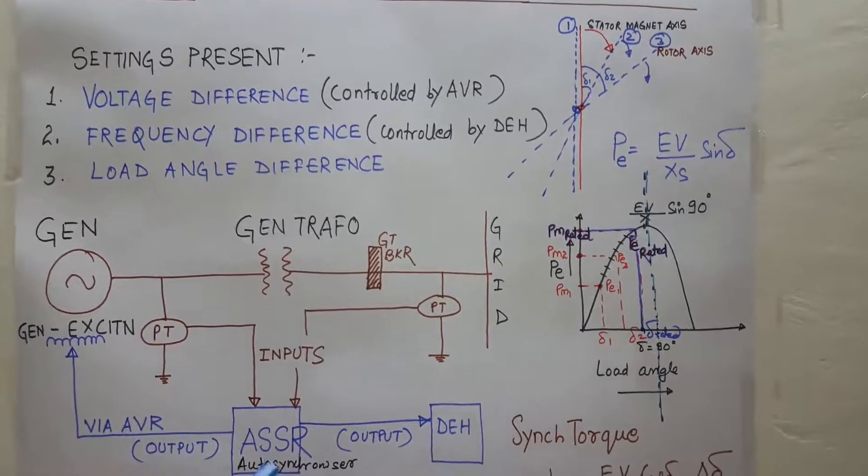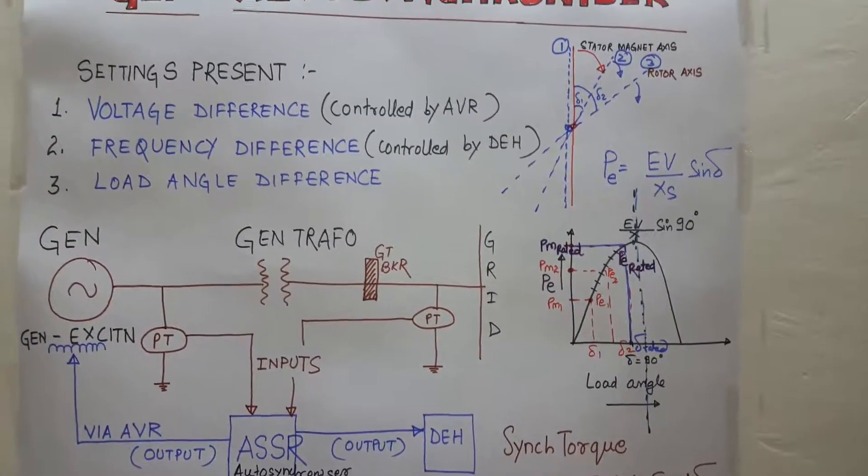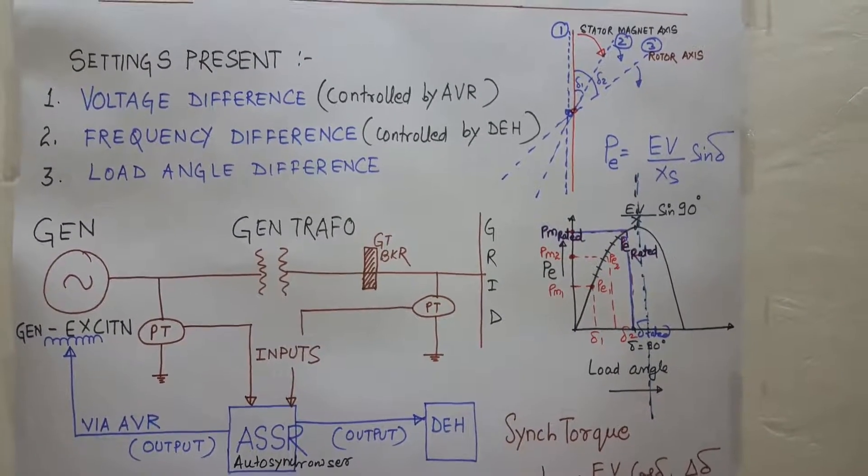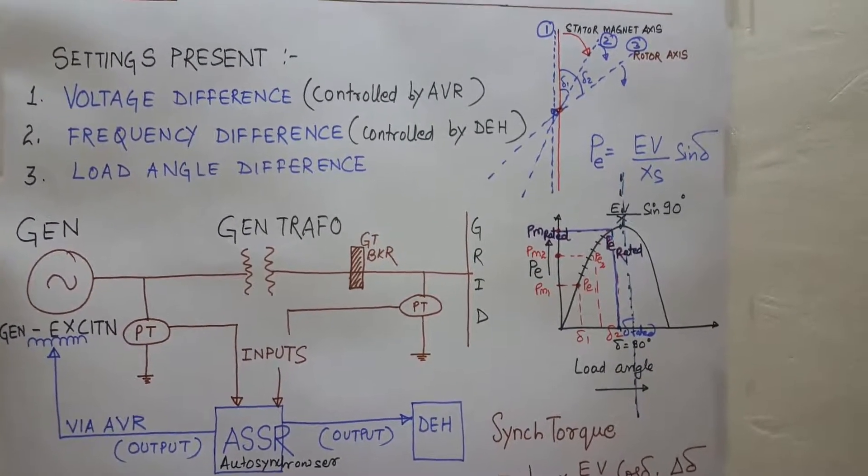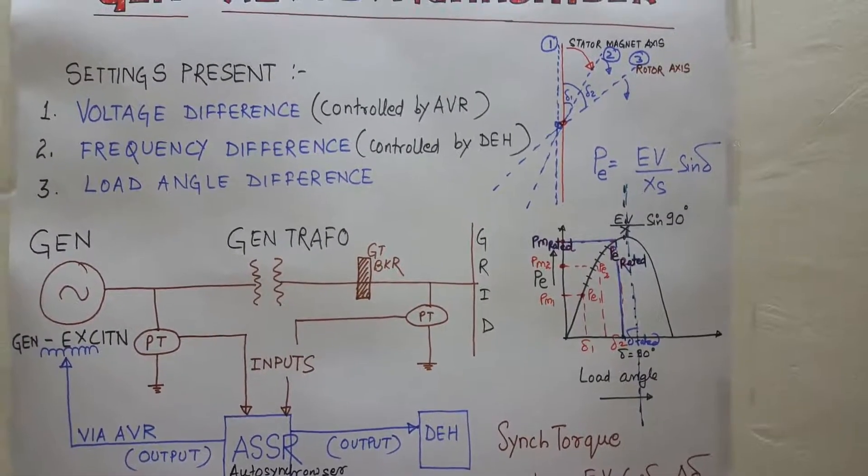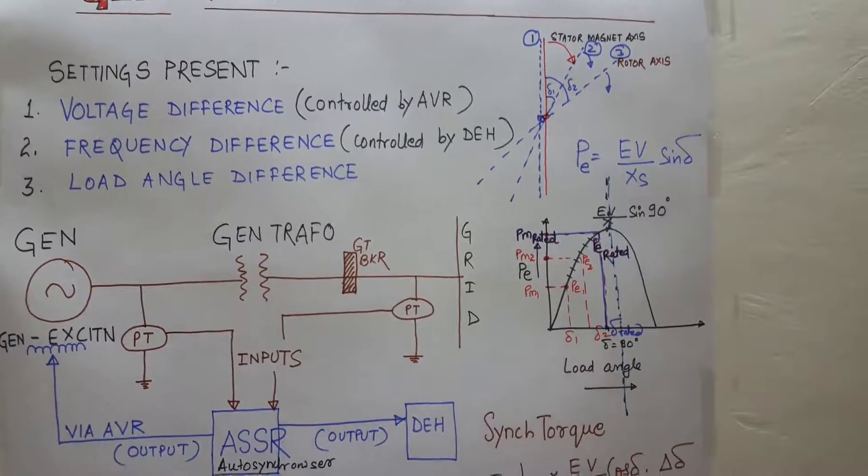So this job is done by the auto synchronizer. We have to just see whether after giving the excitation our voltage is equal to the grid voltage and our frequency is nearly equal to the grid frequency. After that, everything is done by the auto synchronizer only.